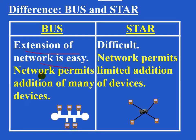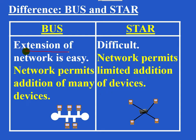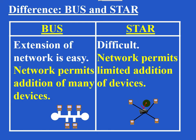Extension of network is easy in BUS topology — it permits addition of many devices. If you want to connect more hosts, they simply connect to the central cable. Extension of network is difficult in star topology, as it permits only limited addition of devices. The switch must have capacity for additional hosts — for example, if it is an eight-port switch, you can connect a maximum of eight hosts. To add more, you would have to replace the switch with a bigger one.